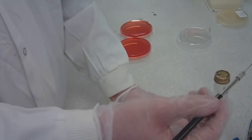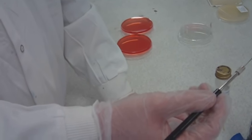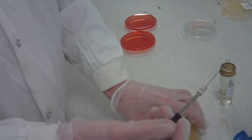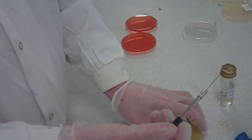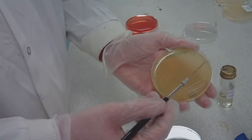Re-flame the loop. In the last quarter of the agar dish, you need to streak the bacterium in a zig-zag formation from the outside of the agar towards the centre.